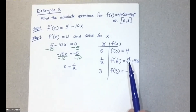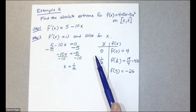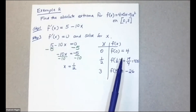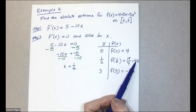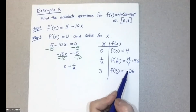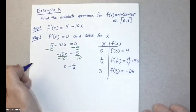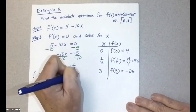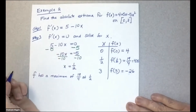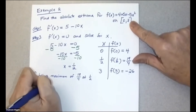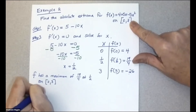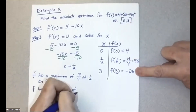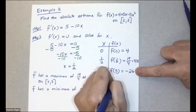These are the actual function values. Looking at the table, 4.75 is more than 4, so the maximum is 19/4 at x = 1/2, and the negative number is the minimum. So f has a maximum of 19 fourths at one half, and f has a minimum of negative 26 at x = 3, both on the interval [0, 3].